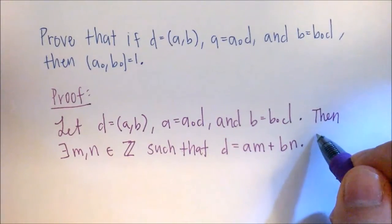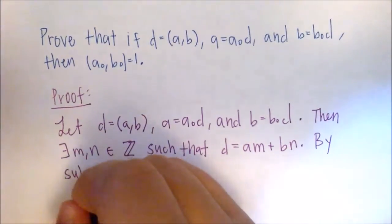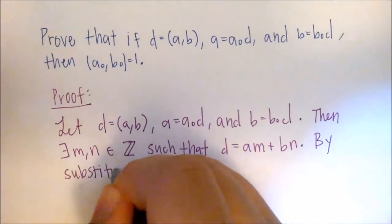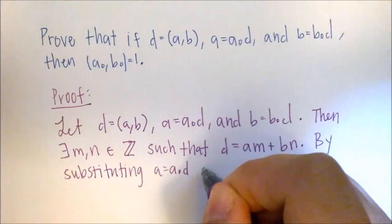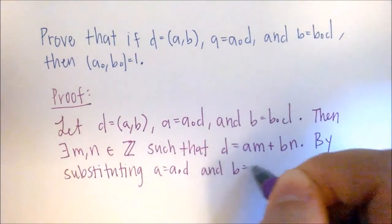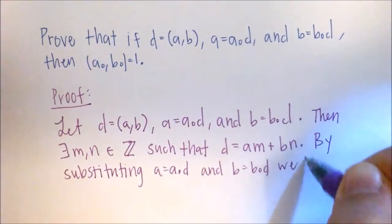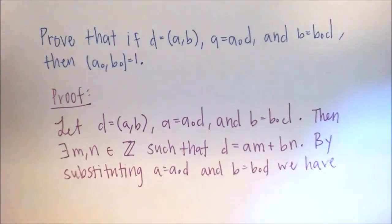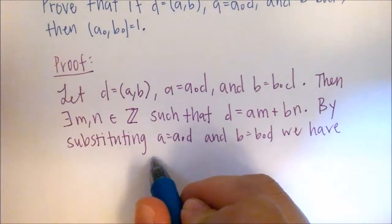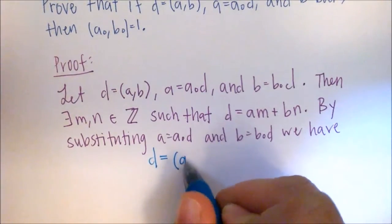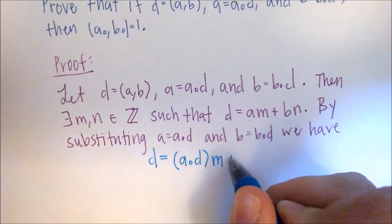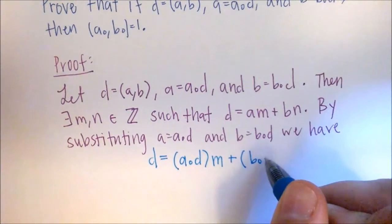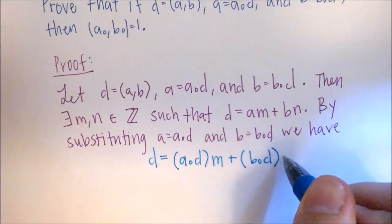So by substituting A equals A0D and B equals B0D, we have D equals A0D times M plus B0D times N.